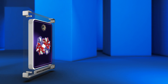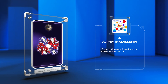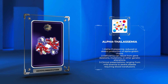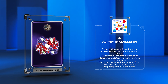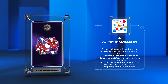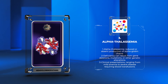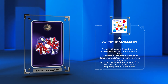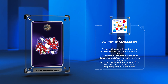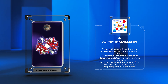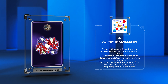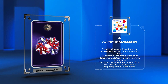Alpha-thalassemia is a hemoglobinopathy characterized by reduced or absent production of alpha-globin chains. This deficiency can result from gene deletions, mutations, or other genetic alterations. Patients with alpha-thalassemia may experience various clinical presentations, ranging from mild anemia to severe disease requiring regular blood transfusions. We will explore the genetics, pathophysiology, and clinical management of alpha-thalassemia.